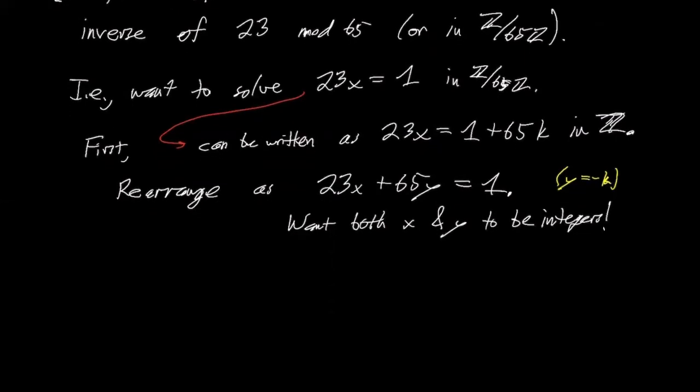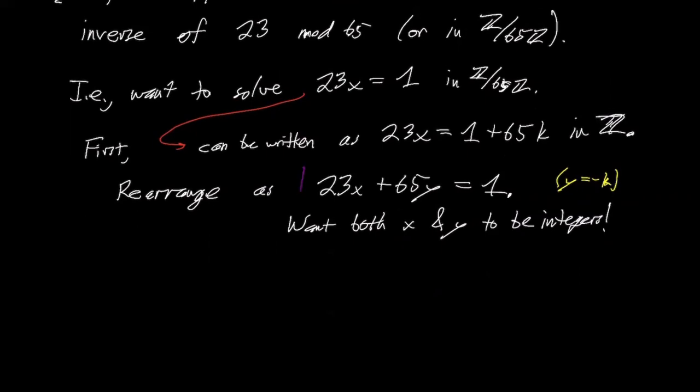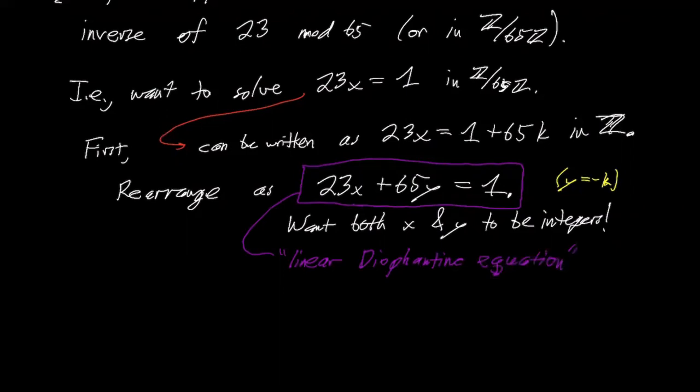But there's a name for this, this is called a linear Diophantine equation. Diophantine equations come from the Greek mathematician Diophantus, and usually means looking for integer solutions to an equation. This in particular is a linear Diophantine equation because it's just a linear equation. There's no x squareds or x times y's or anything like that. So this is a very classic kind of thing to study. Whenever you see the word Diophantine, you should just think integer solutions.